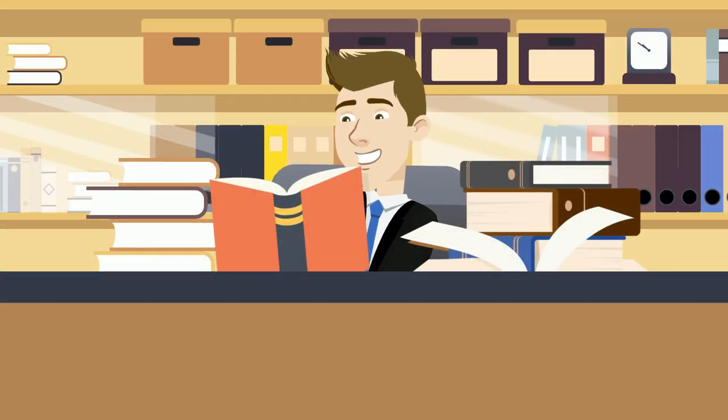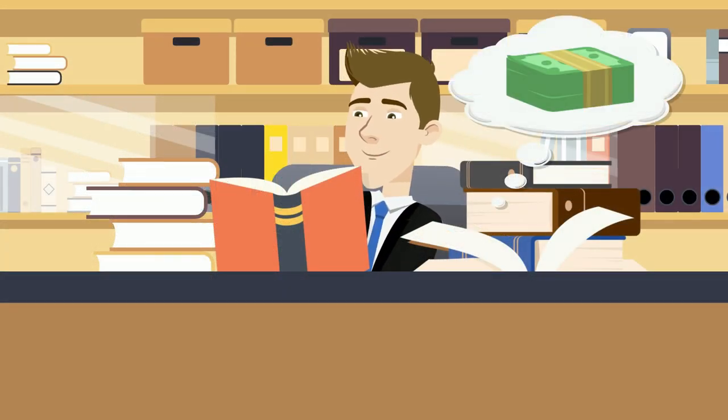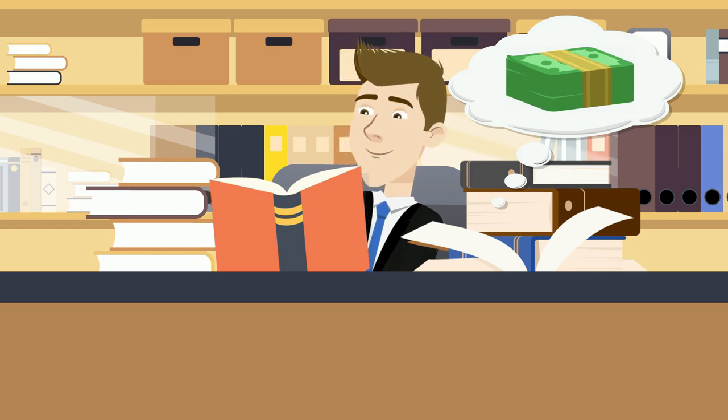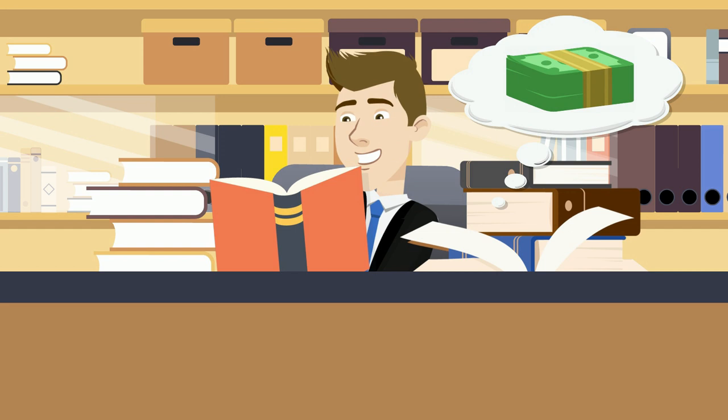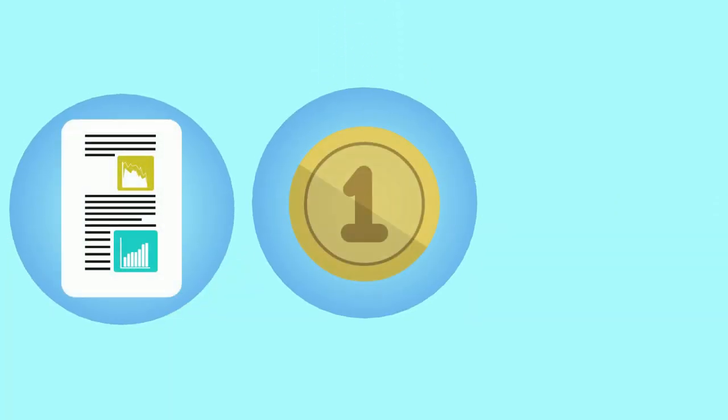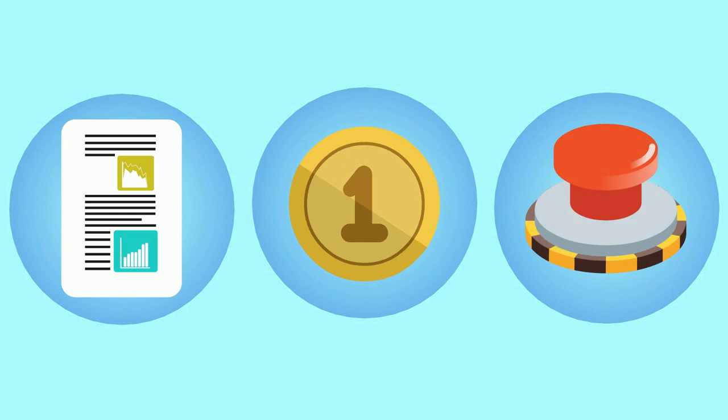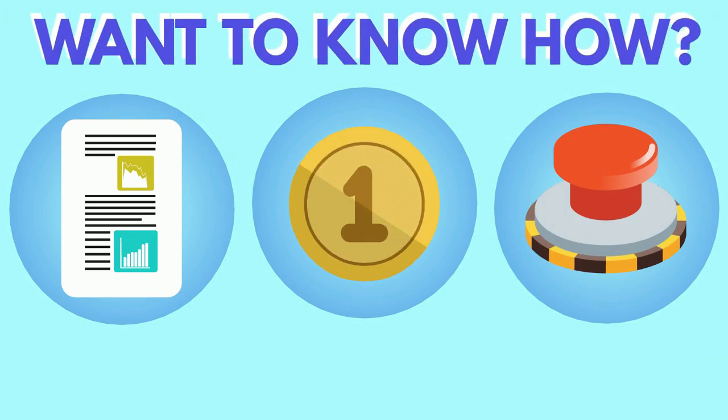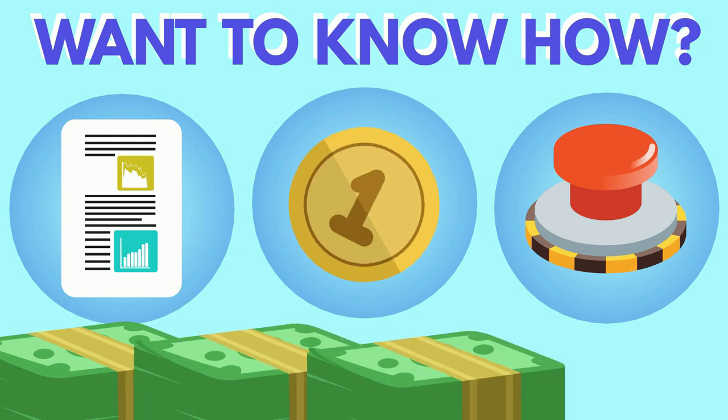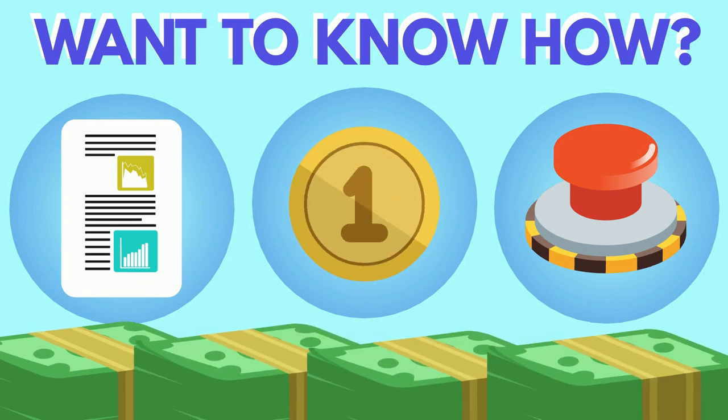Stanley was obsessed with studying the wealthy, whom he called the affluent, and what discerns them from those he calls UAWs, under accumulators of wealth. As it turns out, becoming a millionaire is not rocket science, just a matter of planning well, living below your means, and avoiding a few stupid mistakes. Want to know how? Use these three rules to improve your chances of ending up with a million dollars in the bank.